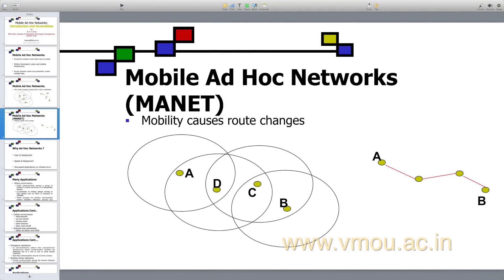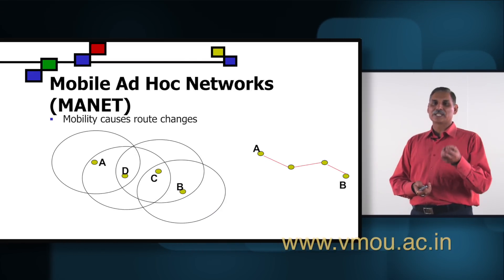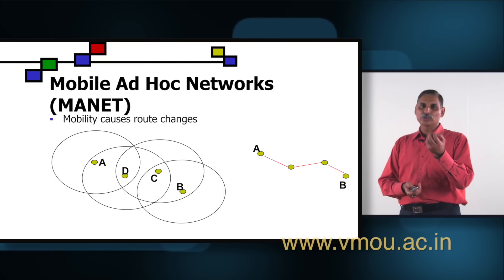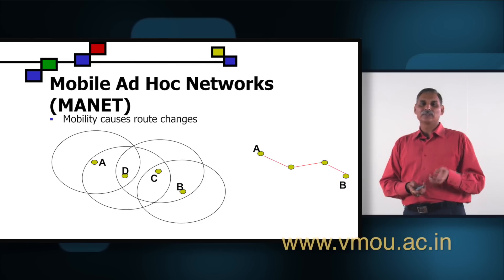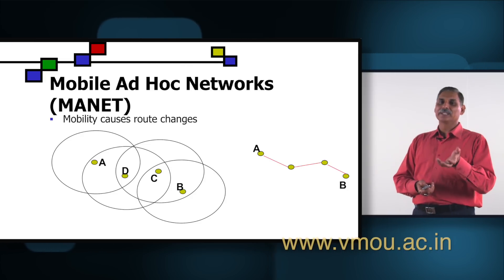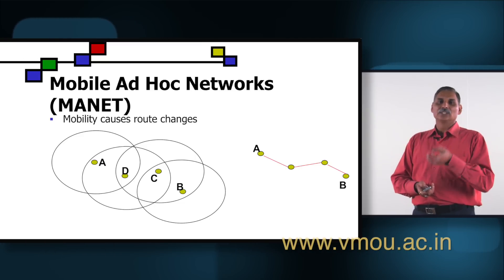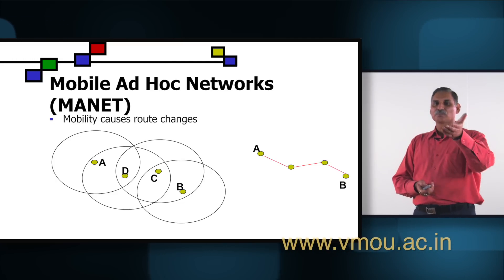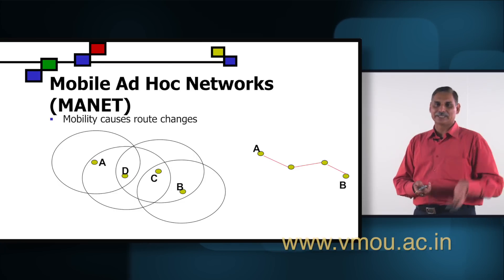In mobile ad hoc networks, mobility causes route changes because every node is mobile in this network. The node which was part of my route may move out of the network, and when it does, it will disrupt the path from source to destination. In that case, we should have a mechanism for finding another route so that the source can send the required information to the destination. For example, if node D has moved out of the network, we have to find another path.